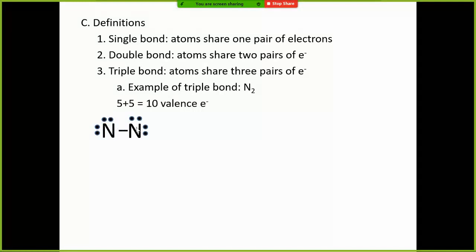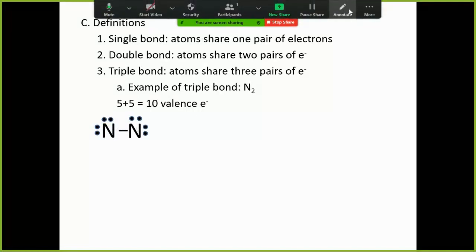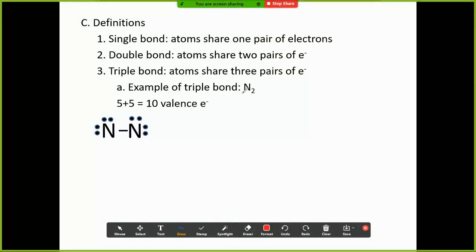Okay, so triple bond, nitrogen. Check out what happens. If you have just nitrogen, you count up how many electrons it has. Valence electrons, nitrogen has five valence electrons. So, two nitrogens makes ten valence electrons. So, we just put the nitrogens together like this. Two nitrogens. And just spread out the 2, 4, 6, 8, 10 valence electrons.